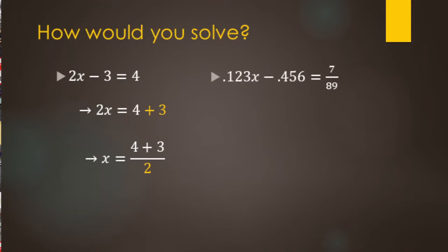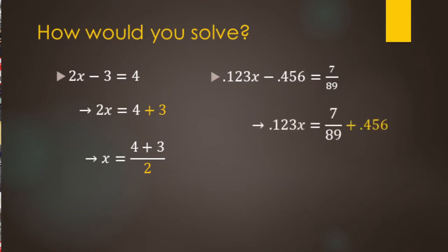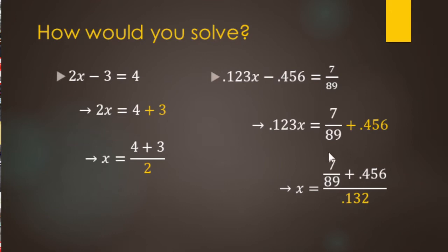Another example: 0.123X minus 0.456 equals 7 over 89. To get X by itself, we start by adding 0.456 to both sides, then divide by 0.123. These are very messy numbers, and we're just not doing the intermediate calculations here. You'll see how this translates to our literal equations or rewriting formulas in a moment.